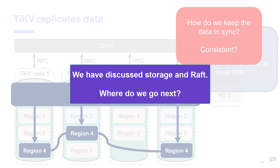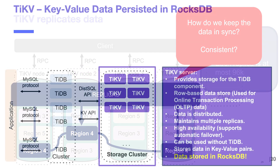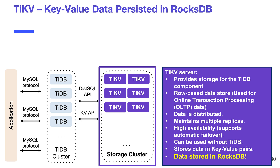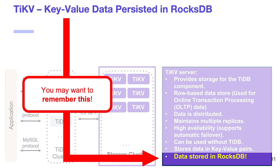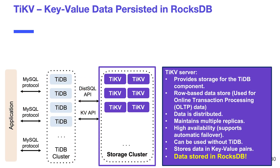We've been discussing storage. Data is stored in RocksDB within TiKV — key-value pair data is stored in TiKV, and recall that there are two RocksDB instances in each TiKV node: one for data and one for logs. TiDB is very unique in that it has two different storage engines: TiKV for transactional processing, and a columnar store — TiFlash — which we're going to discuss next.